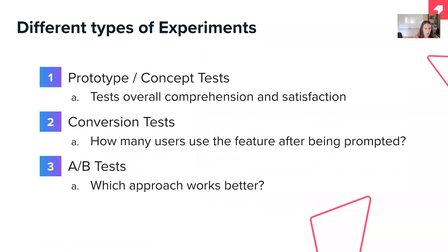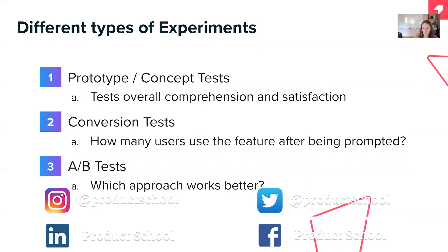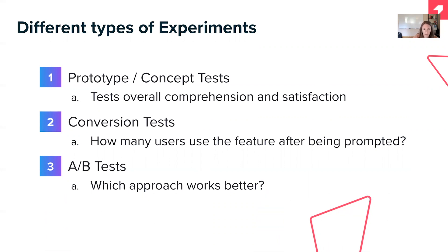There are a few different types of experiments. The first is a prototype or concept test — you have a UI and think it's the right thing to build, and you bring it in front of users to test overall comprehension and satisfaction. Are they able to get value? Are they excited? Will it solve their problem? The second is a conversion test — if you give users a prompt, do they use the feature and click on it? The third is an A/B test — you have two different approaches and run a test to determine which makes more sense.